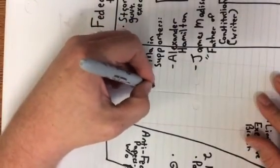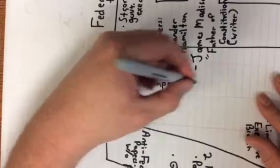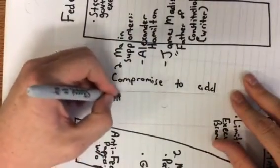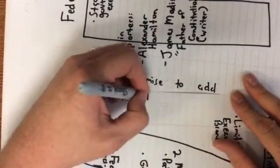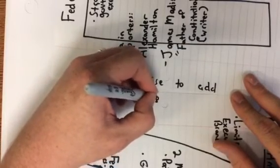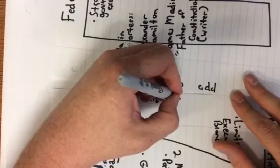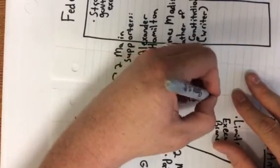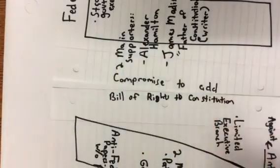Eventually what's going to happen — and we'll write this in the middle of our two papers with the dots — is they're going to compromise to add the Bill of Rights to the Constitution.